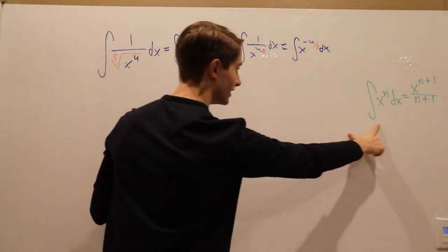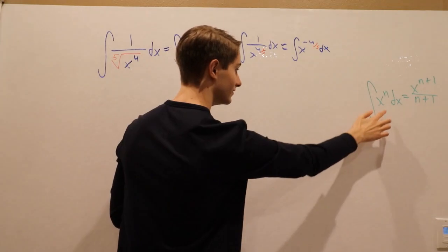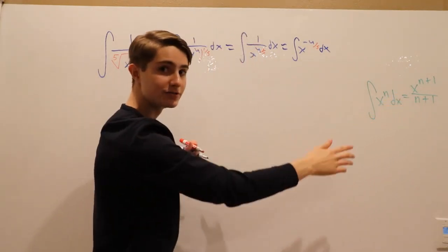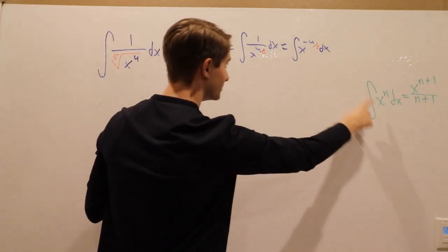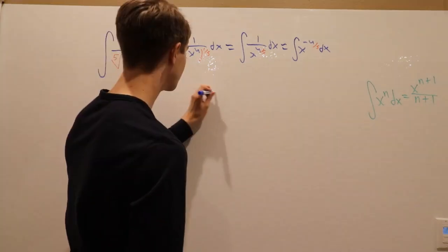this formula is the same as our power rule formula over here, which tells us the integral of x to the n dx is x to the n plus one divided by n plus one. Right here it's in this form with n being negative four-fifths, which means we can use this formula. So that gives us that this integral is equal to